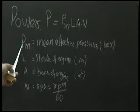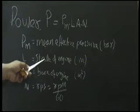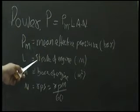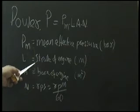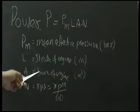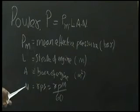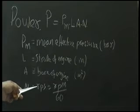L is the stroke of the engine in meters — that is fixed. A is the bore area of the engine in meters squared — it is also fixed. And N here refers to RPS, that means revolutions per second.